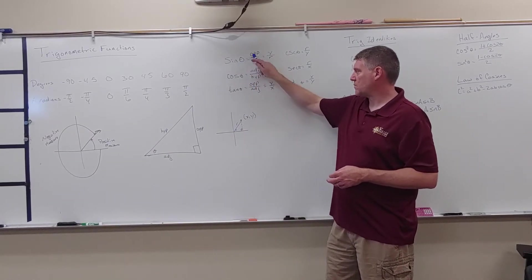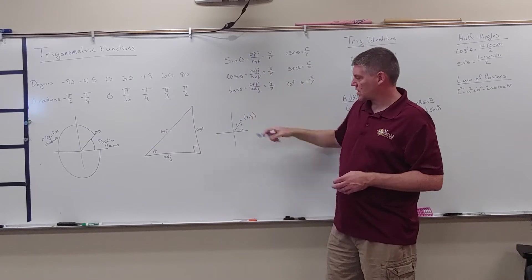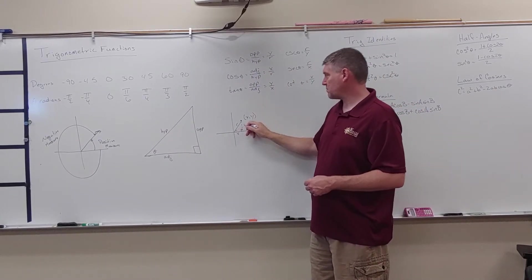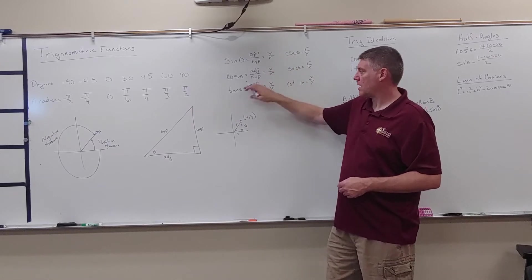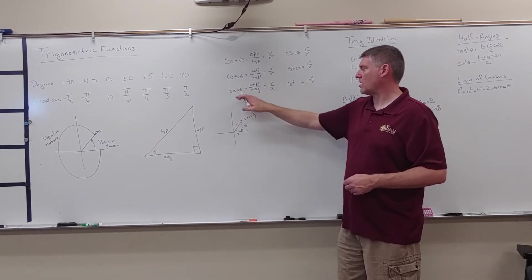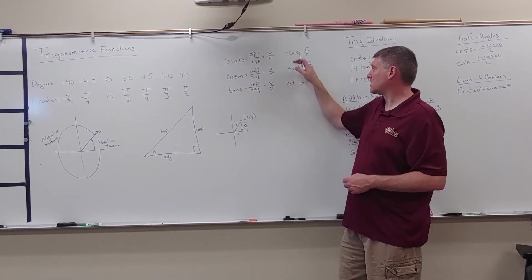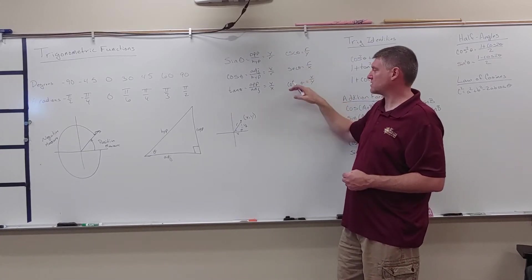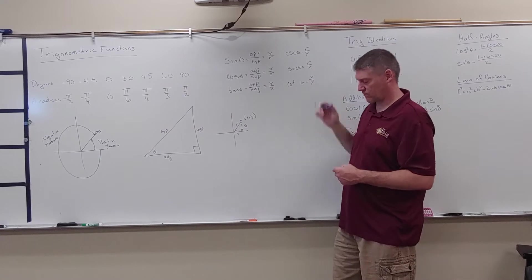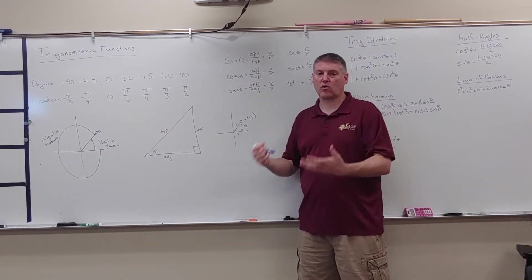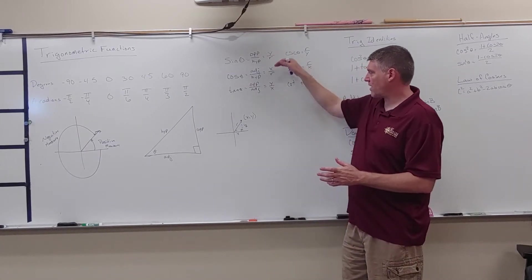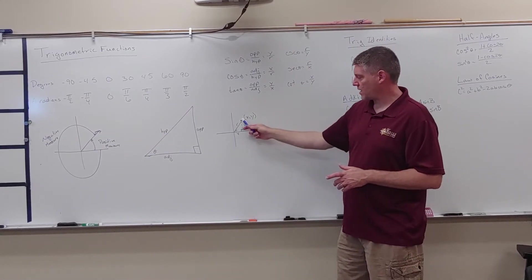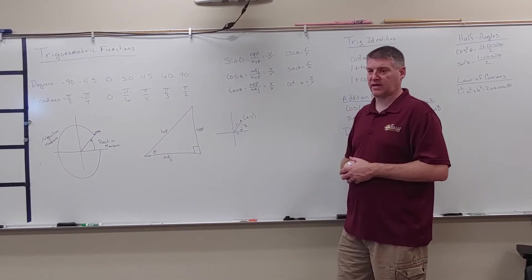Sine now is opposite over hypotenuse, but if I look here, that's going to be y over r. Cosine is x over r, tangent is y over x, cosecant is r over y, secant is r over x, and cotangent is x over y. So now I can take a coordinate and find all six trig functions based on that coordinate. To find r, I'm going to use Pythagorean theorem.